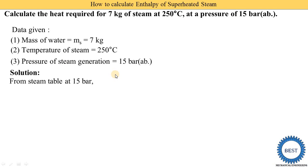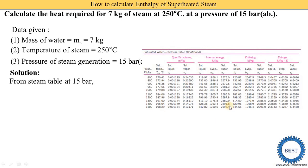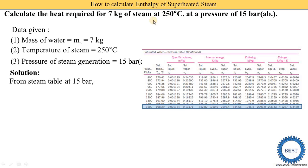First we look at the steam table at 15 bar. This is a pressure-based steam table. 15 bar is equal to 1500 kilo Pascal. In the second column you can see the saturated temperature is 198.29 degrees centigrade. The given temperature is 250, which is higher than the saturated temperature — that means this is a problem of superheated steam.